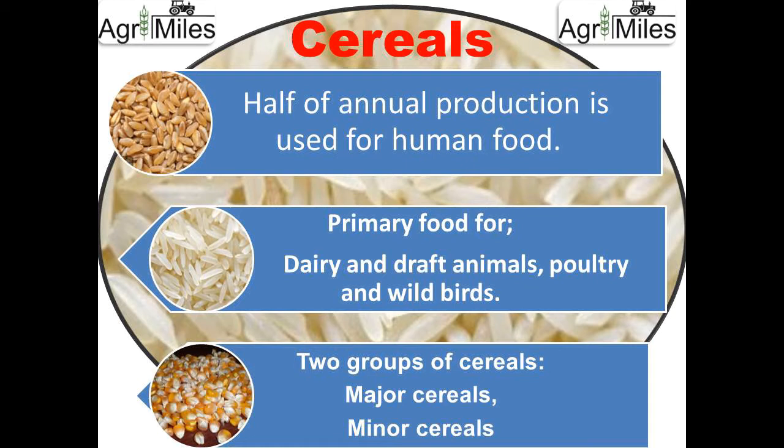Basically there are two groups of cereals: the major cereals and the minor cereals. This classification is arbitrary or random, depending upon the area under cultivation, production, and consumption. So any cereal in the minor group can move to the major group, or any in the major group can move to the minor group, if their area, production, and consumption change.